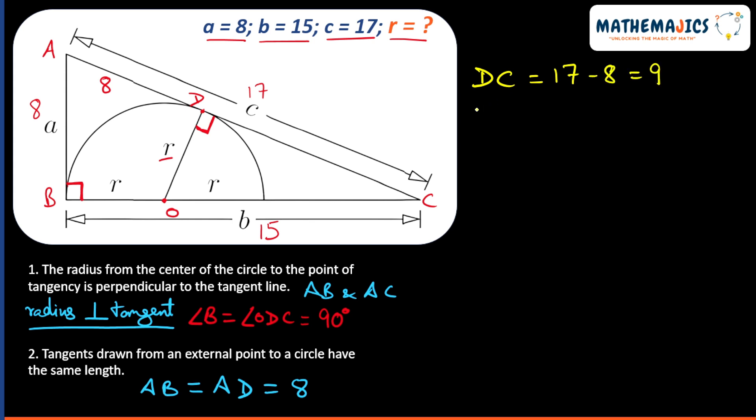Now we can see that OC is equal to 15 minus R. We know that OD is the radius of the circle, that is R.